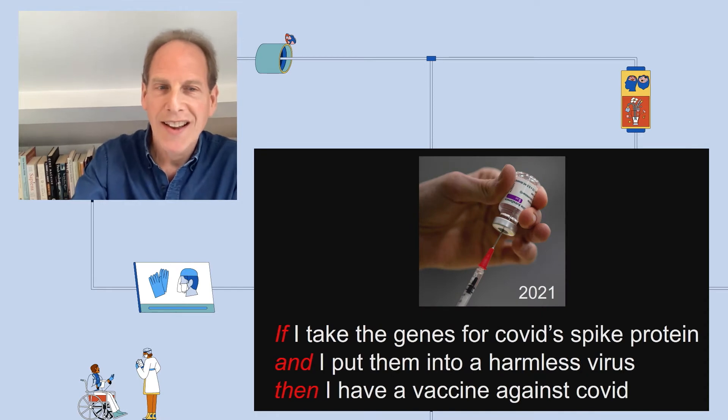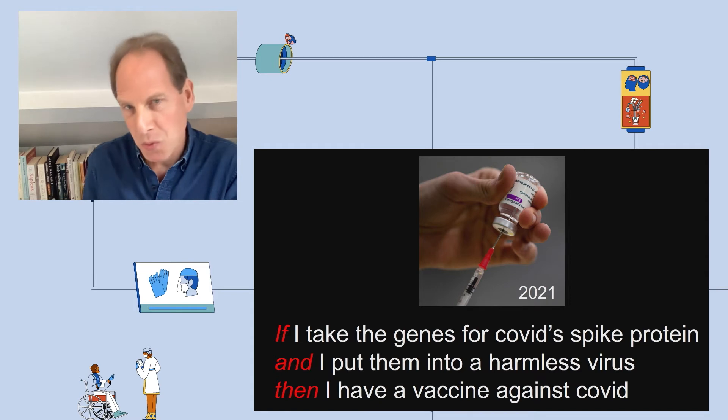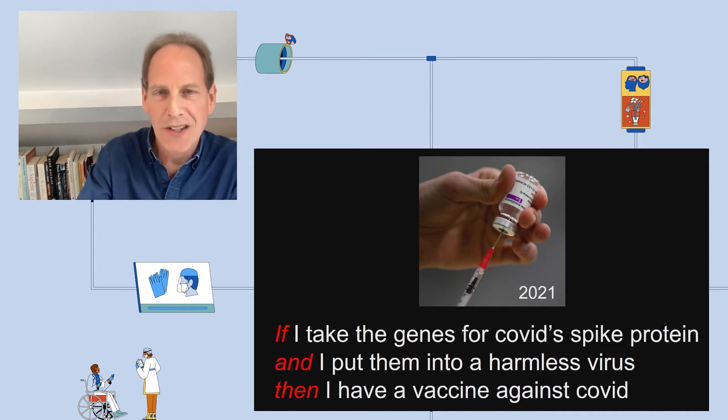And we're still inventing unstoppably today. A recent example, which has been talked about earlier, the invention of the vaccine: if I take the genes for COVID spike protein and I put them into a harmless virus, then I have a vaccine against COVID.